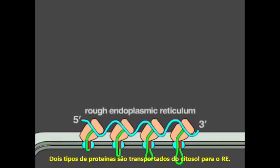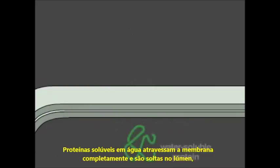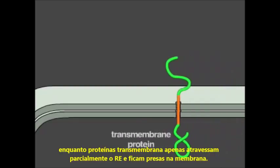Two kinds of proteins are moved from the cytosol to the ER. Water-soluble proteins completely cross the ER membrane and are released into the lumen, while transmembrane proteins only partially cross the ER and become embedded in the membrane.